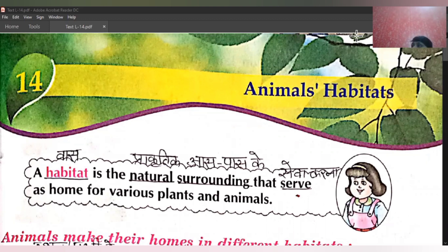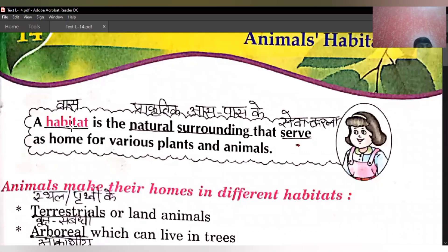What are habitats? Habitat means the living place — jahaan par animals rehte hain. A habitat is the natural surrounding that serves as home for various plants and animals. Habitat ek aisi prakritik jaga hoti hai, jahaan par alag-alag tarah ke plants aur animals rehte hain — aisi jaga jo plants aur animals ko rehne mein madad karti hai, jo unka ghar kehlata hai.